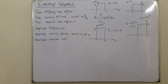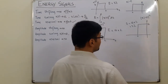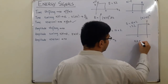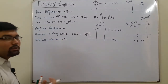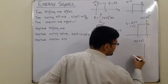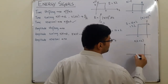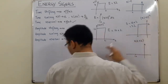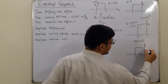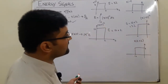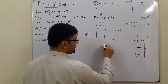Now time shifting. Let's say we have x(t+2). t+2 means you shift the signal towards the left by 2 units. So if this was the original signal located at t = 0, now it would be located at t = −2. The shape and amplitude are unchanged, so the energy is again 32.